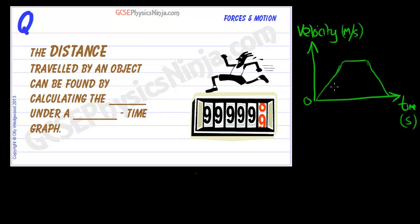And if you wanted to work out the distance that's travelled by this object as it accelerates, and then goes at a constant speed, and then decelerates, we could work out the area underneath. Simple as that.